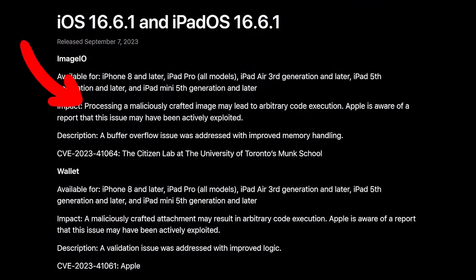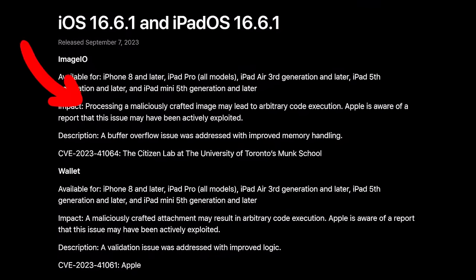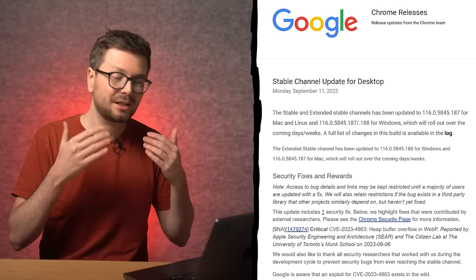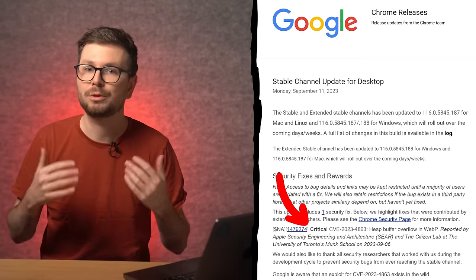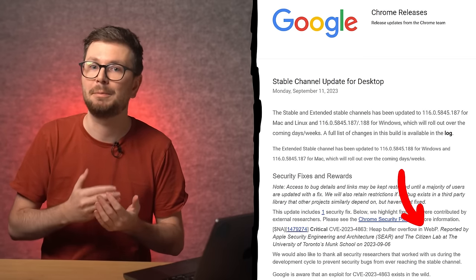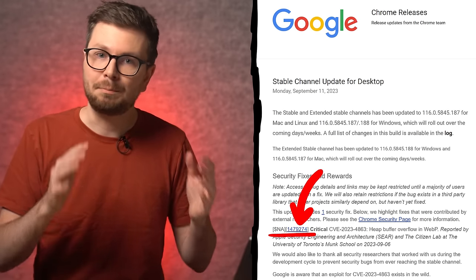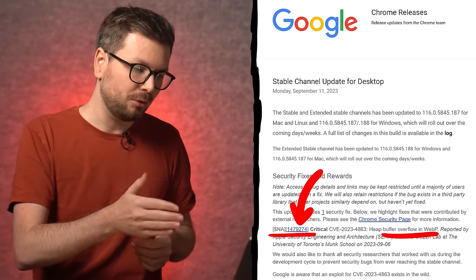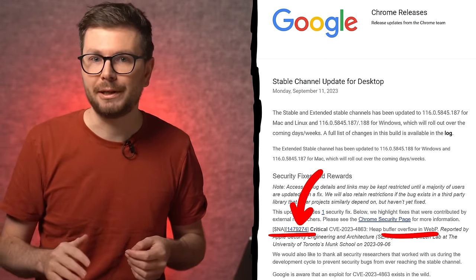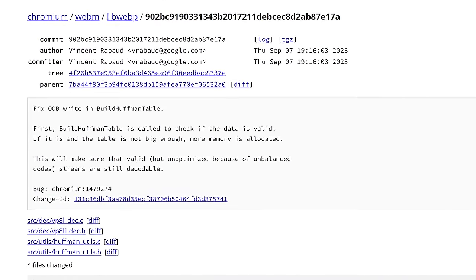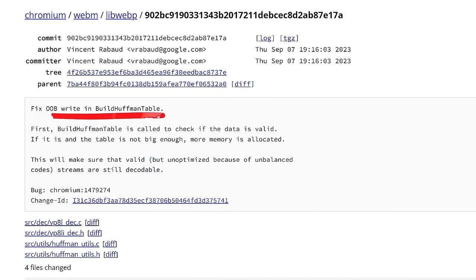Processing a maliciously crafted image may lead to arbitrary code execution. A few days later we also got an update from Chrome reporting that a critical heap buffer overflow was reported in the image format webp. At the time the bug report details were still restricted, but it was clear that there was an issue with the image format webp. And finally it was confirmed here. When looking at the webp commits there were changes related to fix out of bound write in build Huffman table.